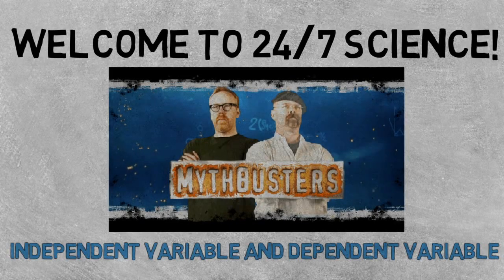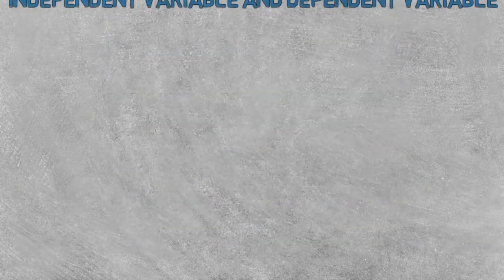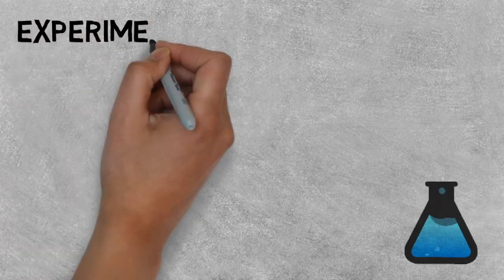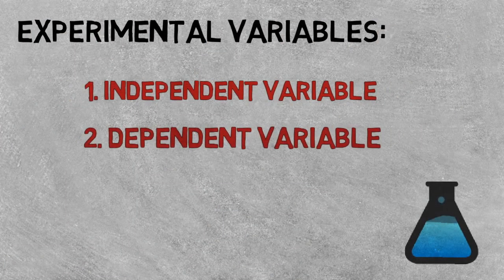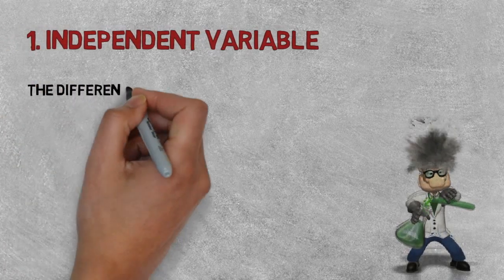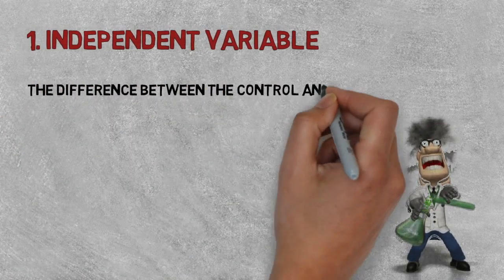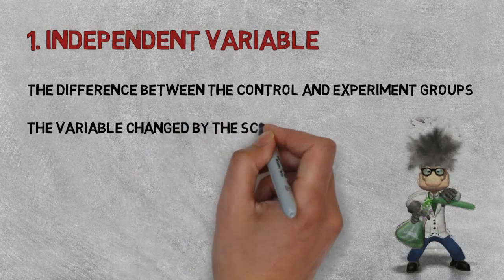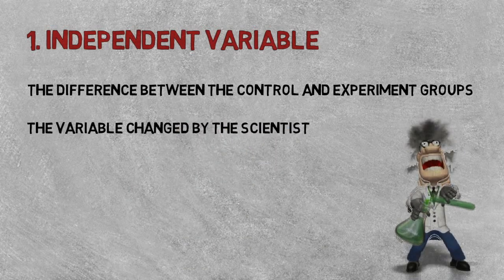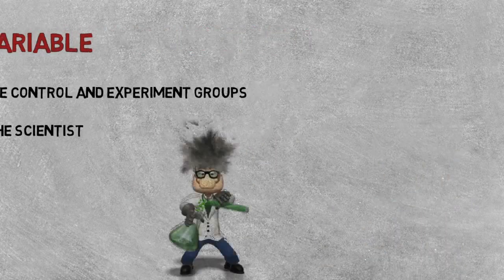First, let's get some terms clear. There are two main types of variables in an experiment: the independent variable and the dependent variable. The independent variable is the difference between the control and experimental groups of an experiment. It is the variable changed by the scientists to test the experiment's hypothesis.